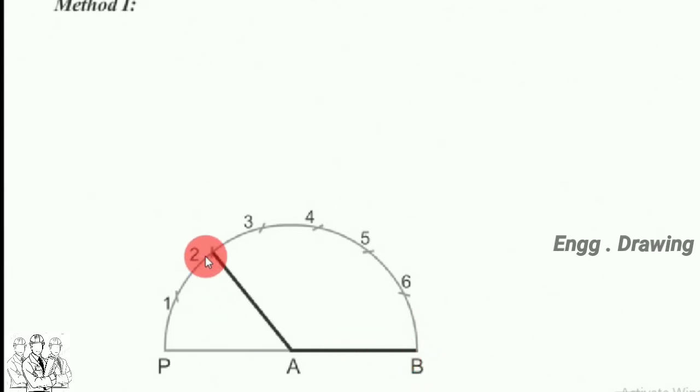Draw a line joining A with the second division point 2.